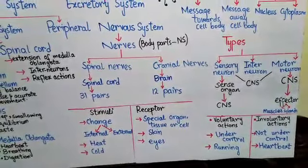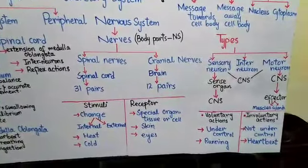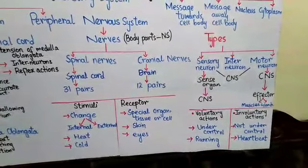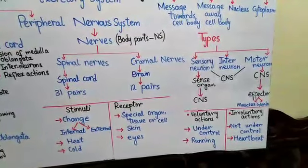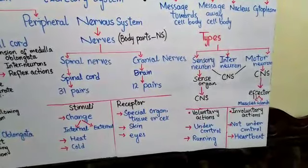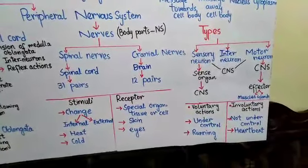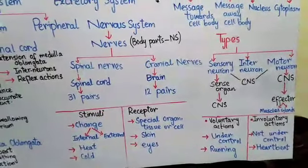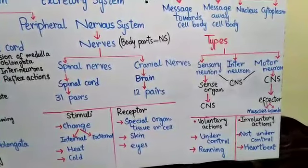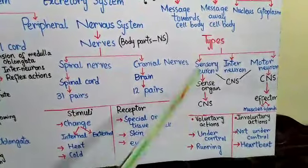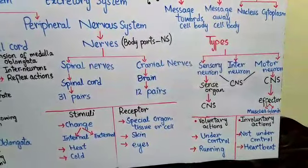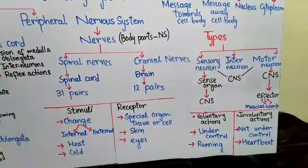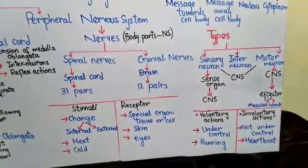The last topic on page 7 is actions controlled by the nervous system. There are two types: voluntary actions and involuntary actions. Voluntary actions are those under conscious control — actions you think about and then perform, such as running, speaking, eating, walking, and clapping. Involuntary actions are those without conscious control, such as heartbeat, digestion, small intestine movement, and eye reflexes.